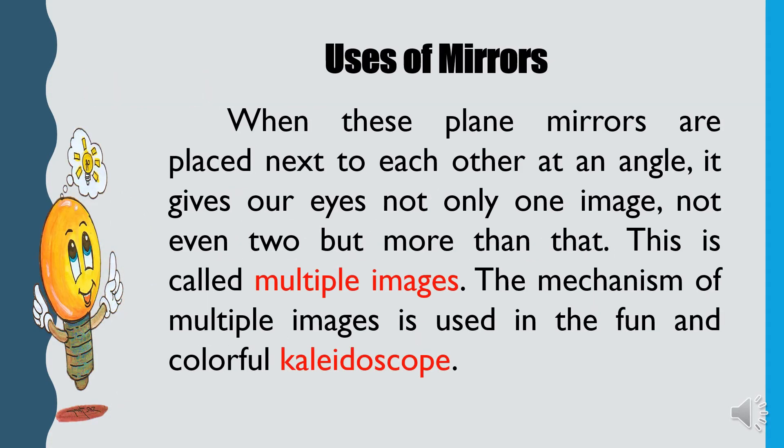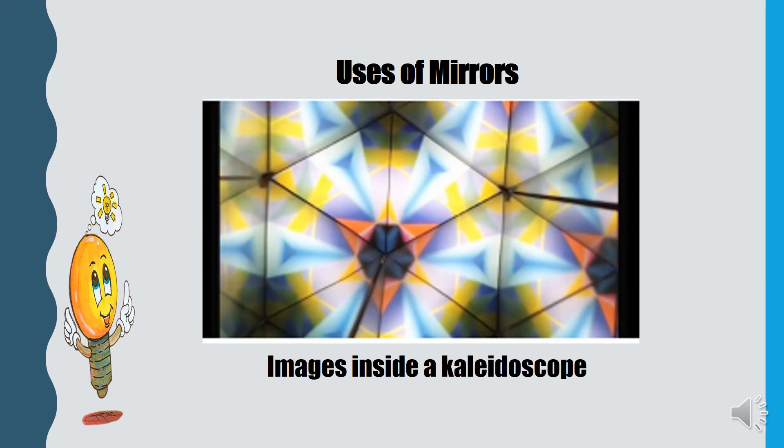When these plain mirrors are placed next to each other at an angle, it gives our eyes not only one image, not even two, but more than that. This is called multiple images. The mechanism of multiple images is used in the fun and colorful kaleidoscope. Here is an example of images inside a kaleidoscope.